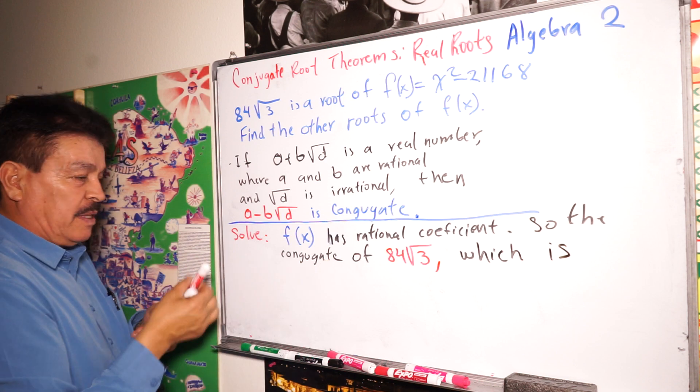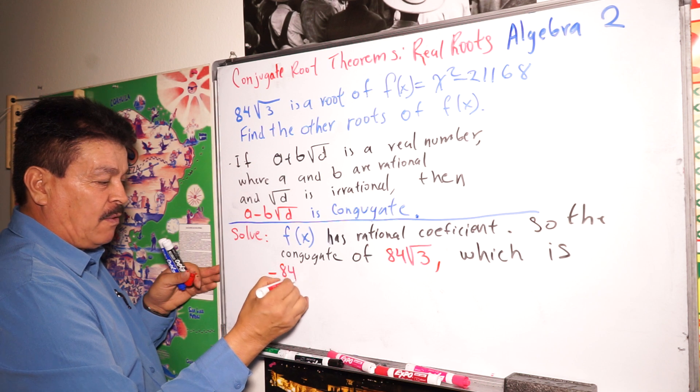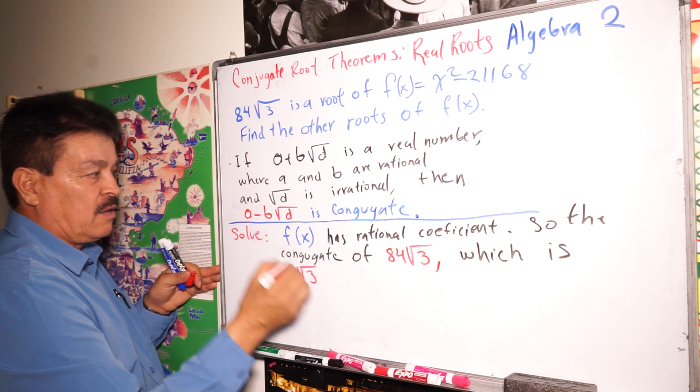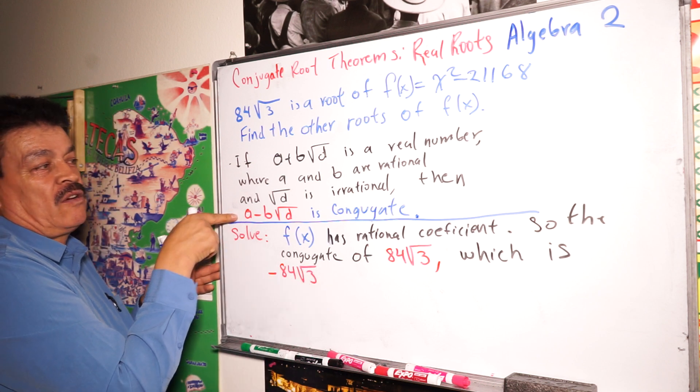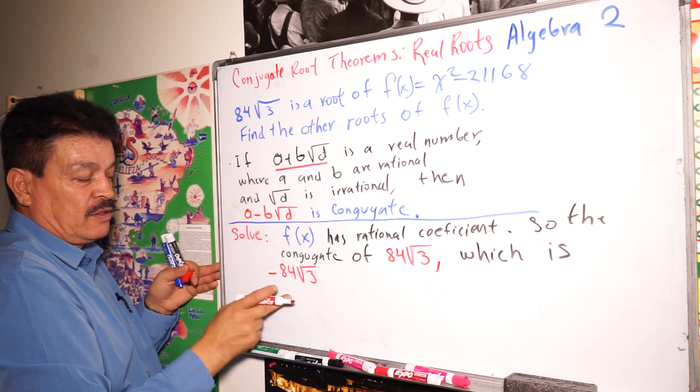What is the conjugated in this case. So, it's going to be here. And then, negative 84 square root of 3. Look at this. The concept. Look at here. Here, this one. And then, this one. It's conjugated.